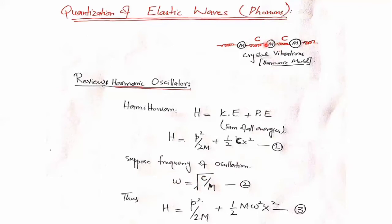The frequency omega is given by the square root of C over m, where m is the total mass of the individual atom interacting with the other identical atoms. If we substitute C = mω², the Hamiltonian becomes p²/2m plus half mω²x².